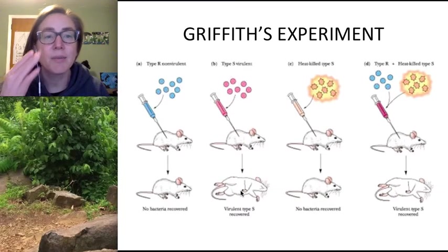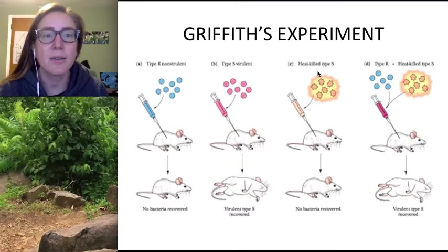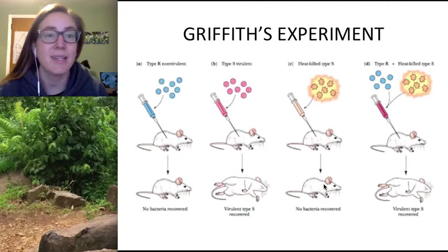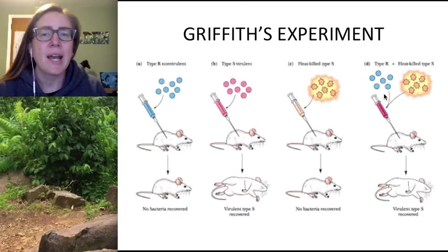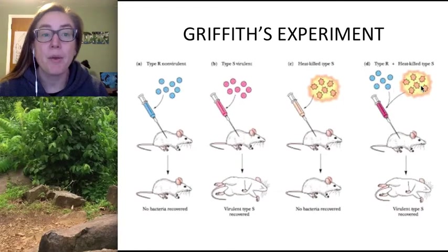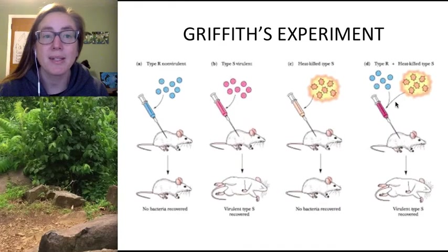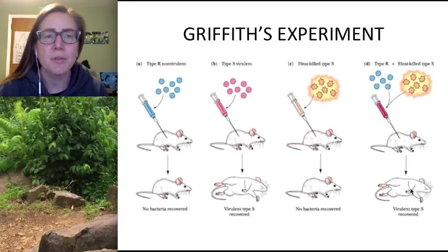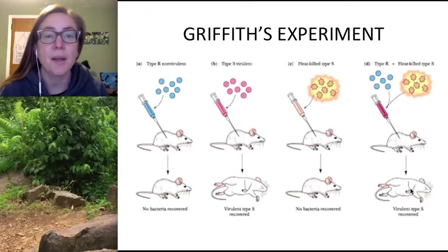What Frederick Griffith then did was use heat to kill the S bacteria at a certain temperature. The dead heat-killed bacteria, when injected into the mouse, didn't even cause any sickness. Then he mixed together a living R strain and a heat-killed S strain. Both on their own do not cause death, but when mixed together and injected into the mouse, the mouse ended up dying. Griffith's conclusion was that a process of transformation happened — the harmless R bacteria were somehow transformed by some factor given to it from the S bacteria.